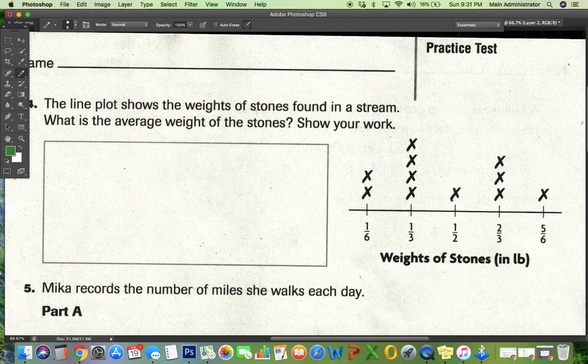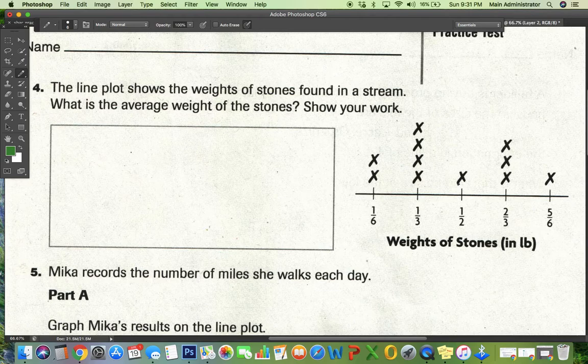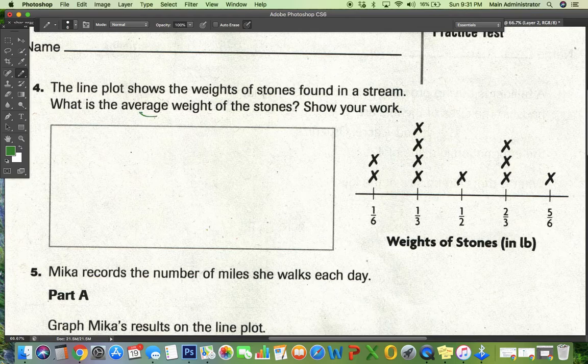This is SB48. Let's take a look at number four. The line plot shows the weight of stones in a stream and I have to find the average. Average means I have to add all my terms up and divide by how many terms I have total.